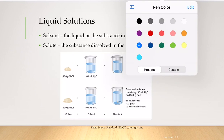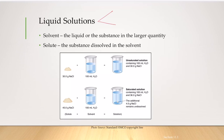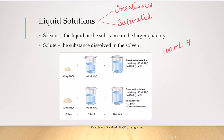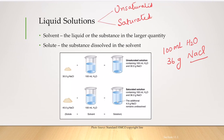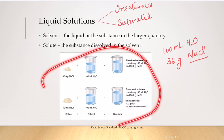In general, in 100 mL of water you can dissolve a maximum of 36 grams of NaCl (table salt). Anything below 36 grams of sodium chloride dissolved in 100 mL of water is going to be an unsaturated solution.